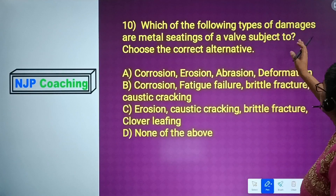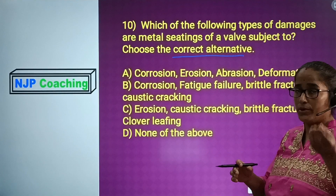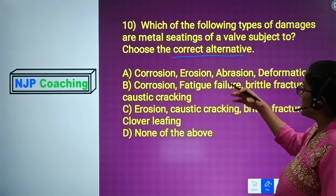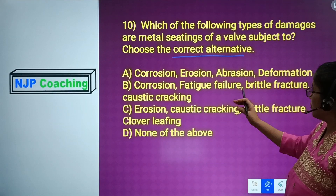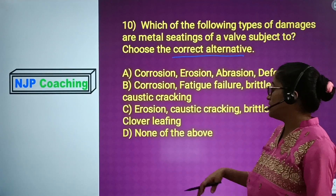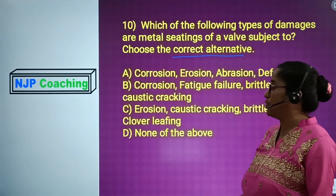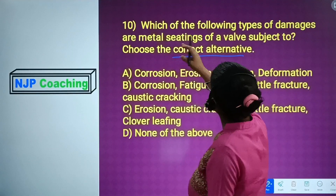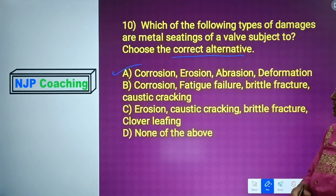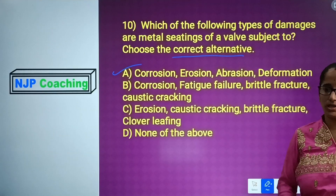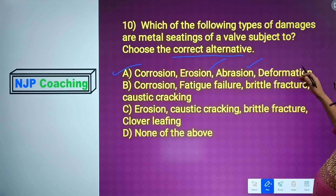Question number 10: Which of the following types of damages is the metal seating of a valve subject to? A) Corrosion, erosion, abrasion, deformation. B) Corrosion, fatigue failure, brittle fracture, caustic cracking. C) Corrosion, caustic cracking, brittle fracture, cleavage lifting. D) None of the above. The correct answer is option A — corrosion, erosion, abrasion, and deformation. Corrosion means wearing away; erosion means cohesion damage; abrasion means surface wearing; deformation means shape change.